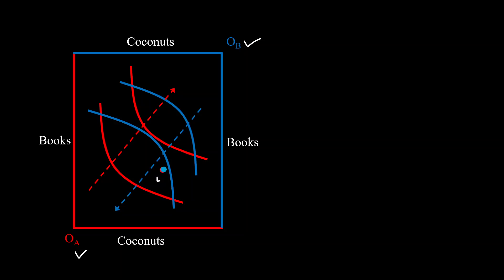Now wait a second, take a look at their respective allocations. It's just one point on the graph, right? So in an Edgeworth box you need to know only one set of coordinates to know the allocations of both the agents.